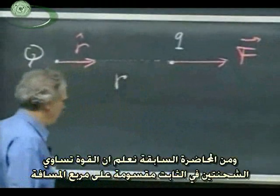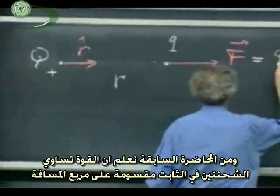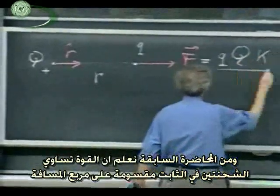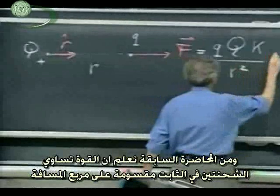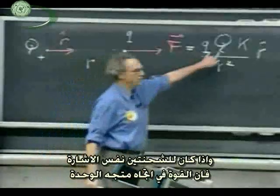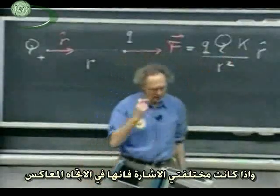And last time we introduced Coulomb's law. That force equals little q times capital Q times Coulomb's constant divided by R squared in the direction of r roof. If the two have the same sign, it's in this direction. If they have opposite sign, it's in the other direction.